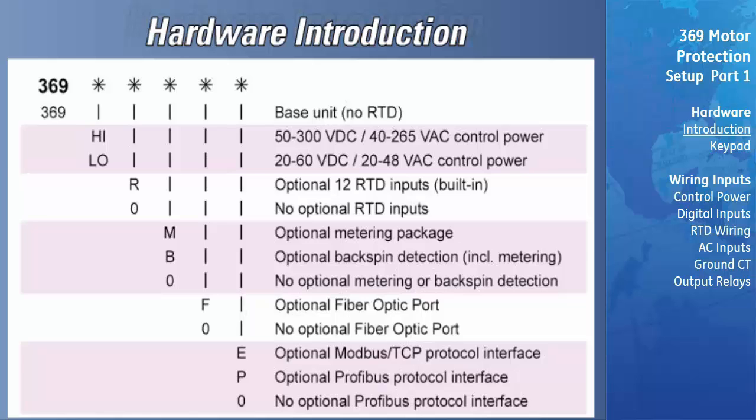The example order code 369 HIGH R000 would be interpreted as follows: A 369 motor protective relay with high voltage control power and 12 RTD inputs.